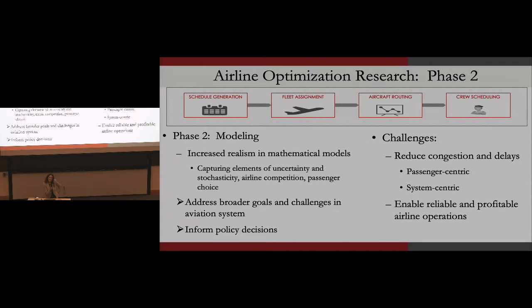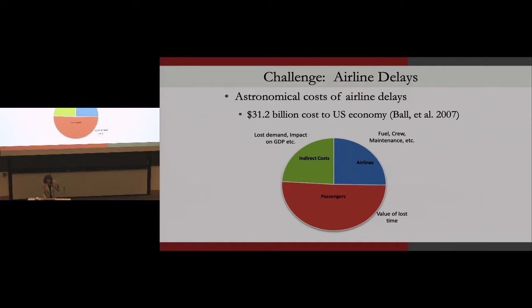Another important shift in phase two is that we think much more about how we can use data, models, and algorithms to inform aviation policy. A while ago, we did an in-depth study of airline delays and found that the cost of airline delays to the U.S. economy was $31 billion, with about half of those costs borne by the passengers. The question is: what opportunities do we have to try to reduce those delays?